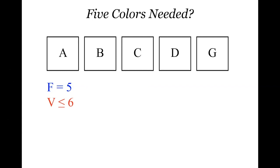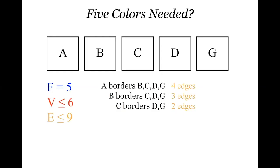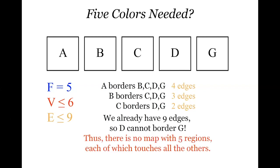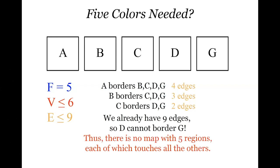Once we have that, the V plus F part has to be 11 or less. So to end up with two, the number we're subtracting can't be bigger than 9 — if E is bigger than 9, the difference is strictly less than 2. So E must be 9 or fewer. But A has to border B, C, D, and G — that's four edges. B also has to border C, D, and G — three more. C has to border D and G — two more. That's already nine. There's no room for D to also border G. So there is no map with five regions each of which touches all the others.